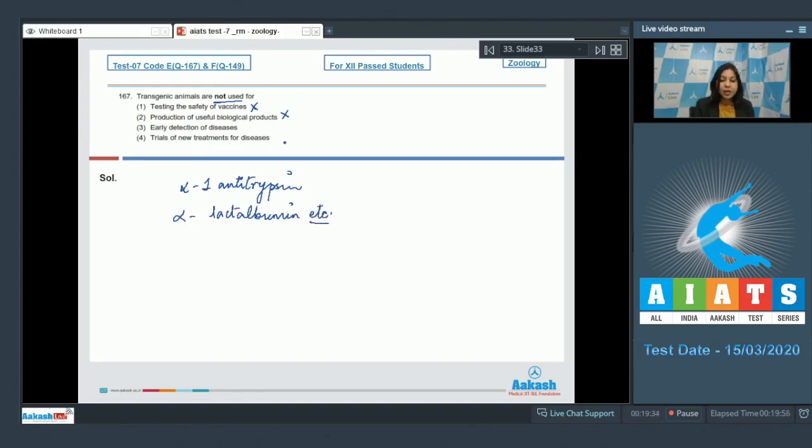Number three, early detection of diseases. This is the correct option, as early detection of diseases in humans cannot be done by the help of transgenic animals.